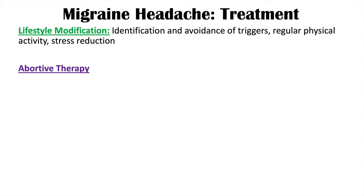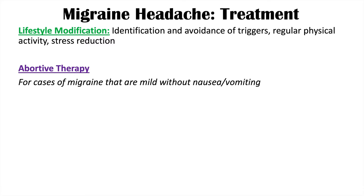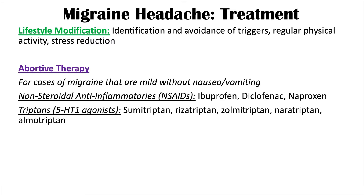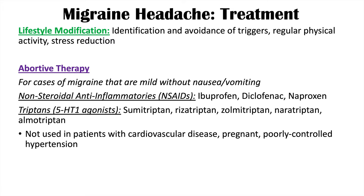Abortive therapy is given during a migraine to abort it. For mild migraines without nausea and vomiting, NSAIDs such as ibuprofen, diclofenac, and naproxen are used. Triptans — 5-HT1 agonists — are another class of abortive medication; examples include sumatriptan, rizatriptan, zolmitriptan, naratriptan, and almotriptan. Triptans should not be used in patients with cardiovascular disease, pregnant patients, poorly controlled hypertension, or more than 10 days per month.